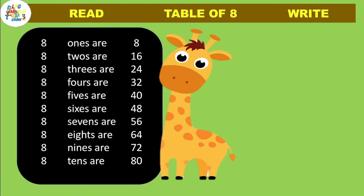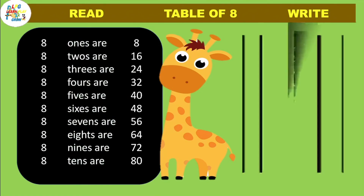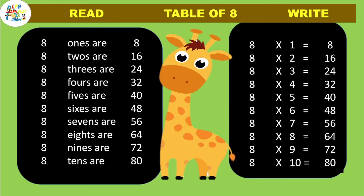Once more. 8 one's are 8, 8 two's are 16, 8 three's are 24, 8 four's are 32, 8 five's are 40, 8 six's are 48, 8 seven's are 56, 8 eight's are 64, 8 nine's are 72, 8 ten's are 80.